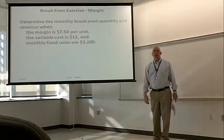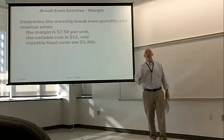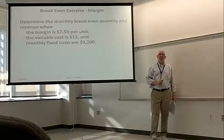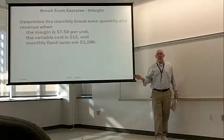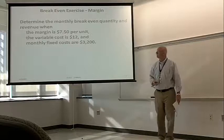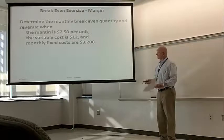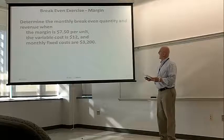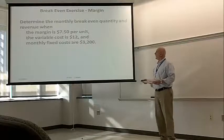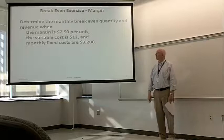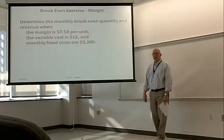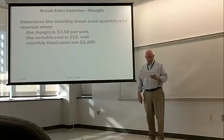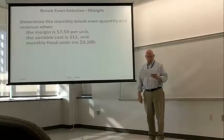First exercise. And by the way, you can just keep watching the video or you can pause and try the problem and then restart it and see the solution. So in this case, determine the monthly breakeven quantity and revenue when the margin is $7.50 per unit, the variable cost is $12, and the monthly fixed costs are $3,200.